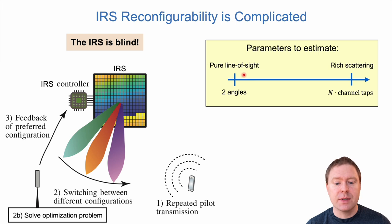In the pure line of sight scenario, the signal that comes from the IRS has one azimuth and elevation angle and it should leave in another azimuth and elevation angle. So we only need to figure out how to switch between two different angles, and for that reason we only need to estimate two parameters. While in a case where there is no structure whatsoever, rich scattering, we have N elements and each of them will have a number of different channel taps that we are observing. So N times tap channel taps—these can be hundreds or thousands of parameters that need to be estimated. Which makes it really complicated because we need to send a lot of pilot sequences and try out many different configurations to get sufficient statistics to estimate all of these parameters.